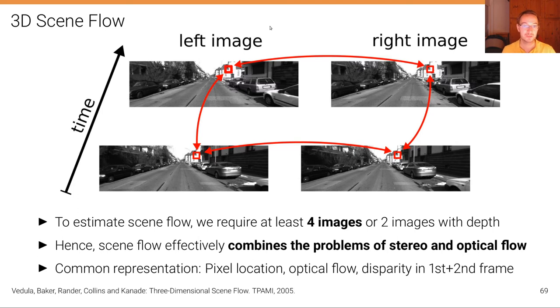which means we have the 3D location at time t plus one. So we have the correspondence of two 3D points, which is exactly our definition of scene flow. Hence, scene flow effectively combines the problems of stereo and optical flow.